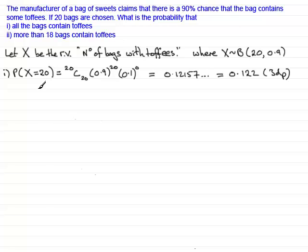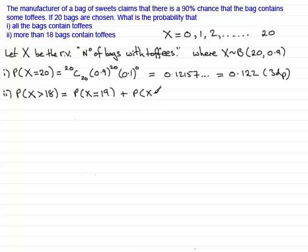In the next example though, we've got several values because we're being asked the probability that the number of bags that contain toffees is more than 18. So X is more than 18. Now the random variable X takes on the values 0 because you could find you've got no bags containing toffees or one bag could contain toffees, two bags and so on, all the way up to 20 bags. So if we're looking for X to be more than 18, it could be that we have 19 bags that contain toffees or it could be 20 bags that contain toffees.